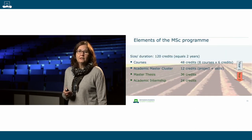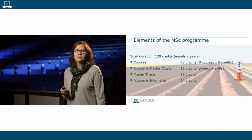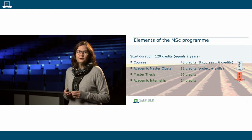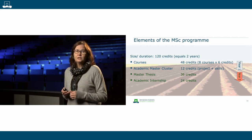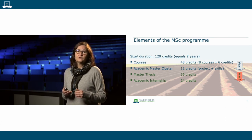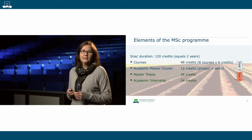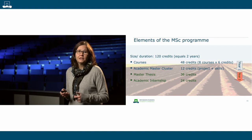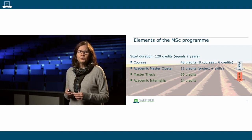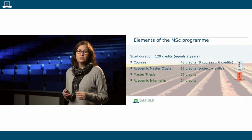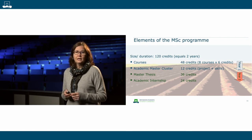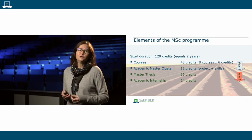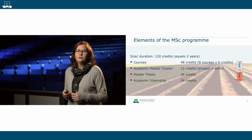Like all master programs at Wageningen University, the Master of Organic Agriculture is built out of four different elements. You will start with courses in the first year. Of the 120 credits in total, you will spend about 48 credits on courses. This is combined with the academic master cluster, for which you will work on a consultancy project, for example for a company in the organic agricultural sector. Then in the second year, you will do two more elements: a six-month master thesis, which is a research project usually done within Wageningen University, and a four-month internship focused on the professional perspective — what do you want to do after graduation? The internship is usually done outside the university.